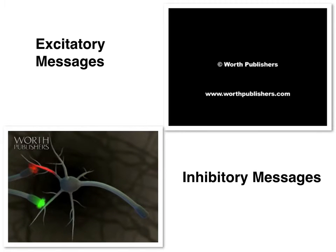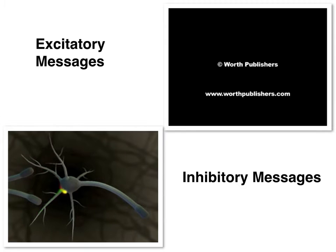Excitatory chemicals activate a neuron by creating a positively charged electrical impulse on the cell membrane. Inhibitory chemicals, on the other hand, create a negatively charged electrical impulse. When a neuron is not being activated by excitatory input, inhibitory input has no notable effect. Inhibitory input reduces or blocks the effect of excitatory chemicals from other cells. When a neuron is being activated by excitatory input from one axon terminal, inhibitory chemicals from another axon terminal can slow or completely stop the excitation.